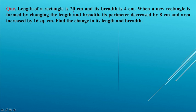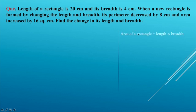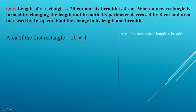We have two terms: the area and perimeter of the first rectangle. The area of a rectangle is length into breadth, which is 20 into 4, equal to 80 square centimeters. The perimeter of a rectangle is 2 into (length plus breadth), which is 2 into (20 plus 4) equal to 48 centimeters.